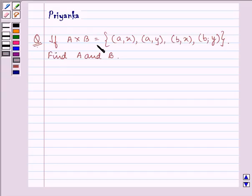It says, if A cross B is equal to the ordered pairs given: (a,x), (a,y), (b,x), (b,y), find A and B.